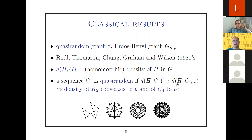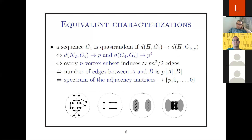This notion of graph quasi-randomness turns out to be quite robust — it's equivalent to many other different notions, as was proven by Chung–Graham and Wilson. Instead of the countably many conditions in the original definition, we can use just two conditions: the density of edges and the density of C₄. I have prepared some illustrative figures to go through the equivalent definitions.